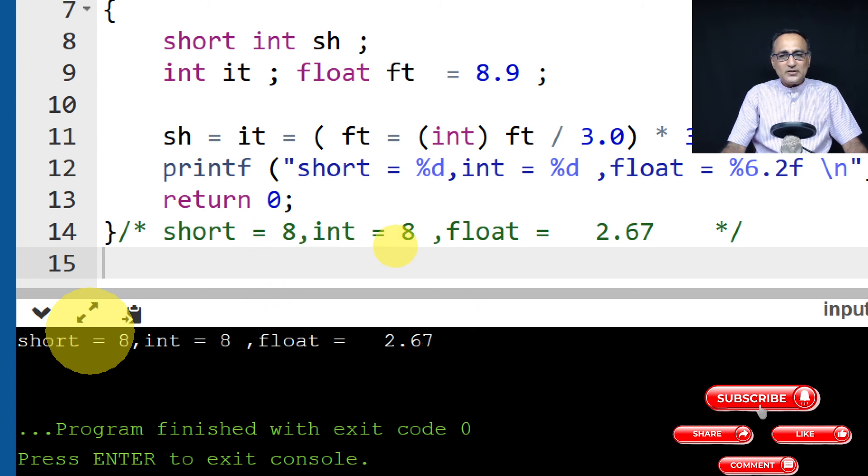So 2.67 into 3.3 happens to be something like 8.9, close to 9. Then only 8 gets assigned here, 8 gets assigned here.